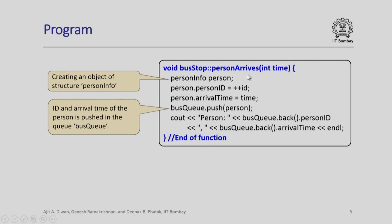Next we have the person_arrives function: void BusStop::person_arrives with parameter time. When called, we define a PersonInfo variable called person and assign ++ID to person.ID. So if our base was 1000, each arriving person is assigned in sequence 1001, 1002, 1003, 1004 as their arbitrary ID. The time passed to this function is the arrival time, assigned to person.arrival_time. We then push this person onto the bus queue, pushing both person ID and arrival time. We also print out information: the person ID and arrival time.